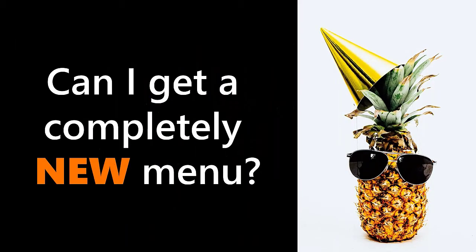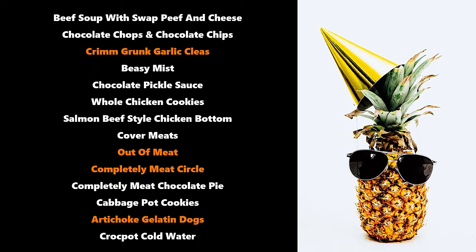Will that mean I can get a completely new menu? The basic answer is no. But the somewhat more advanced answer is that of course you can get some very interesting recipes — the AI does not have a clue what it's actually doing. It can come up with amazing foods like 'cream grunk garlic cheese' or 'busy mist out of meat' or 'completely meat circle artichoke gelatin dogs.' This is a machine learning algorithm created by Janelle Shane, a research scientist. You can Google 'machine learning AI paint names' and it is absolutely hilarious.